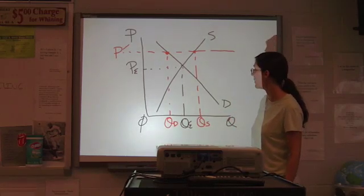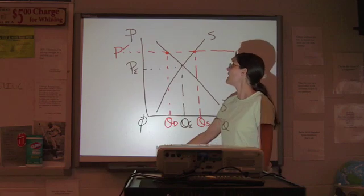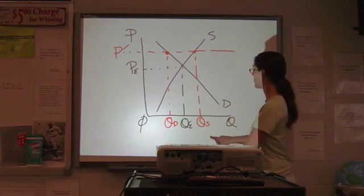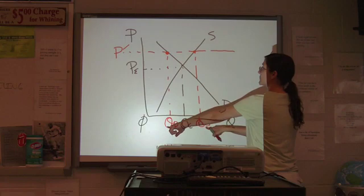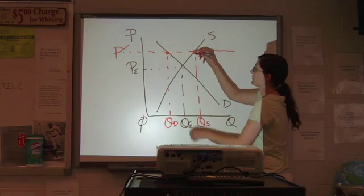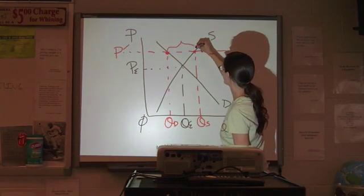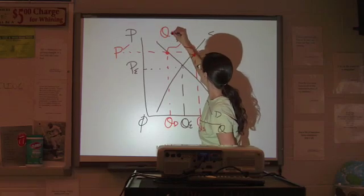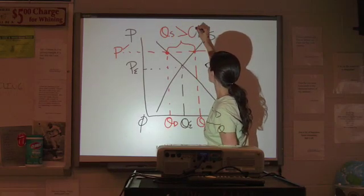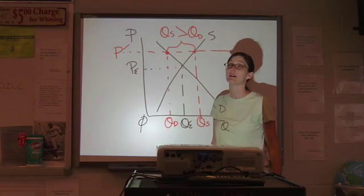So, what do we have here? Quantity supplied is way out here. Quantity demanded is back here. We have a gap between those two things. If your quantity supplied is greater than your quantity demanded, that is a surplus.